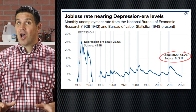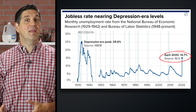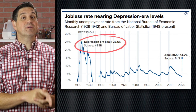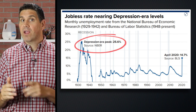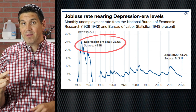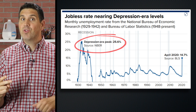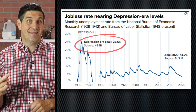Hey Internet, this is Jacob Clifford and welcome to my YouTube channel. The U.S. saw a record-breaking spike in unemployment in 2020. Actually, unemployment was higher back in the 1930s during the Great Depression, but back then it took two years for unemployment to get around 15%. In 2020, it took two months.